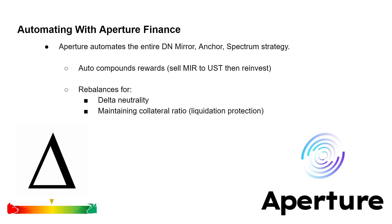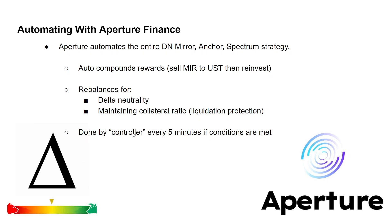Aperture checks for delta neutrality drift and rebalances accordingly to bring the position back to delta neutral. There's also automated liquidation protection: if the underlying asset moves up in price, that changes the actual collateral ratio in an unfavorable way such that you could get liquidated. Aperture detects that and rebalances to bring the collateral ratio back up. All of this automation is done by what they call a controller, which runs every five minutes when certain conditions are met — for example, if the delta neutrality is off by X percent or the collateral ratio is off by X percent.